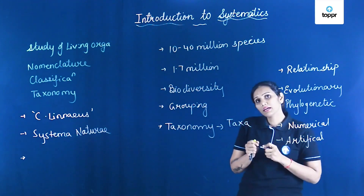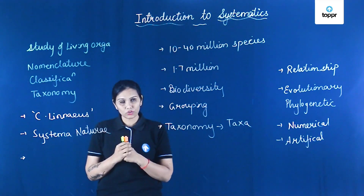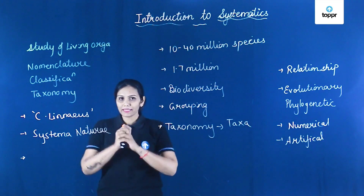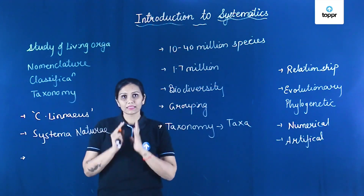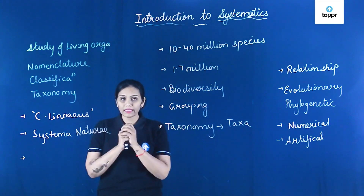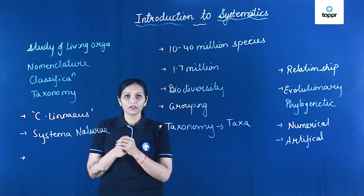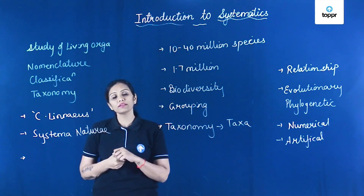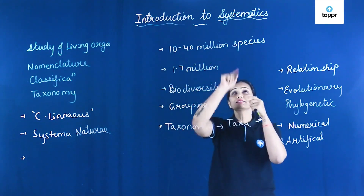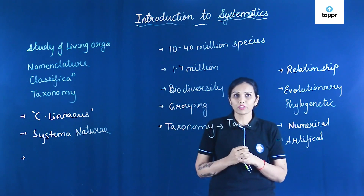In the upcoming sessions we will be talking about the classification system, taxonomy, and the binomial nomenclature given by Carolus Linnaeus. We have seen that systematics explains the biodiversity existing on earth — how we can relate living organisms, how we can classify them, and how nomenclature is done for these living organisms. So in the upcoming session we will be talking about taxonomy, nomenclature, classification systems, and how diverse living organisms are.